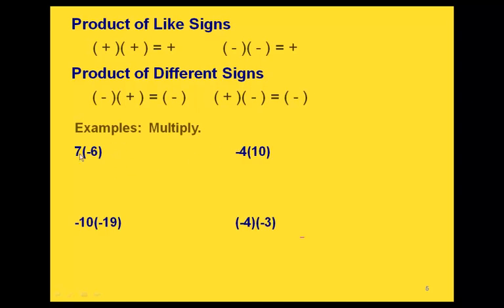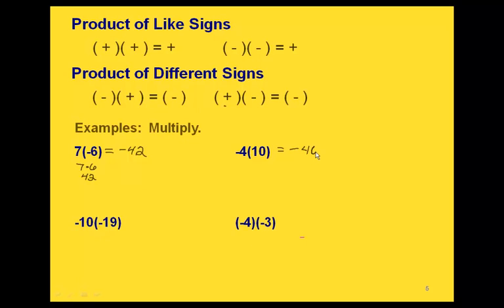Let's do some examples. In all of these we do the multiplication and then figure out the correct sign for the answer. For 7 times negative 6, 7 times 6 is 42. Since we have a plus and a minus — different signs — that's a plus times a minus equals a minus, so the answer is negative 42. We have the same situation with negative 4 times positive 10: 4 times 10 is 40, and since the signs are different we get negative 40.